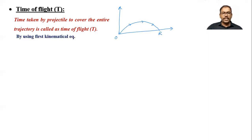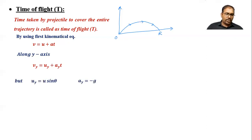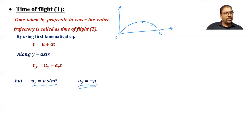Using the first kinematical equation, v = u + at, applied along the y-axis, we write: vy = uy + ay·t. Here, uy is equal to u sinθ and ay is the acceleration due to gravity, so ay equals minus g.